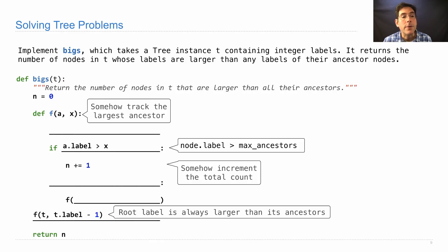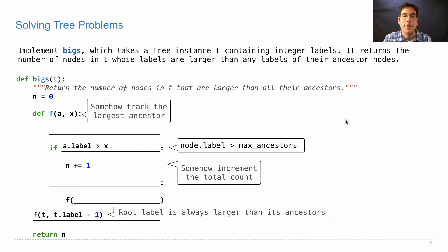Now in this version, f doesn't return anything, and so it would not make sense to return f of t because that would just return None. Instead, we're calling f for the side effect of incrementing n each time I see a node that has the property I want. Now whether it has the property I want or not, I have to keep looking at all the branches because I have to explore all the nodes.